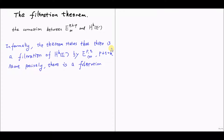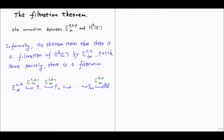Informally, the theorem states that there's a filtration of the cohomology of the total complex by the stabilized objects, where the sum of two superscripts is equal to k. More precisely, there's a filtration given as follows: we start with the object E^{0,k} sub infinity, which is embedded into some object F_1. And this E sub infinity is isomorphic to the quotient of F_1 modulo the previous term. Similarly, F_1 is a sub-object of F_2, and E^{2,k-1} sub infinity is a quotient of F_2 modulo F_1.